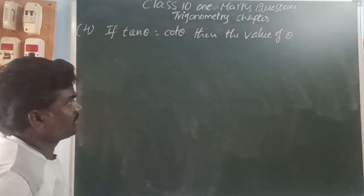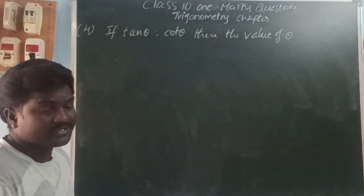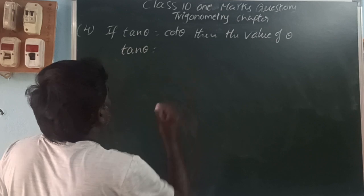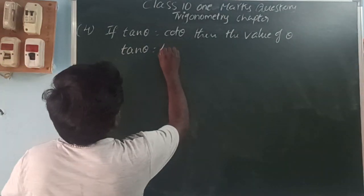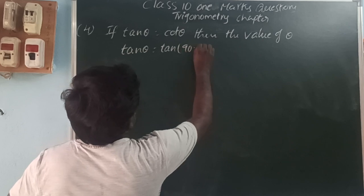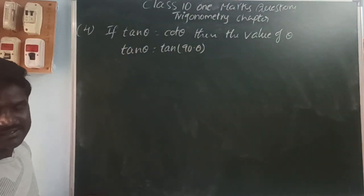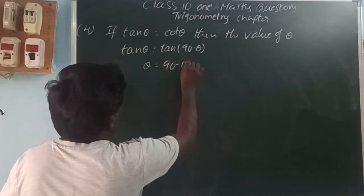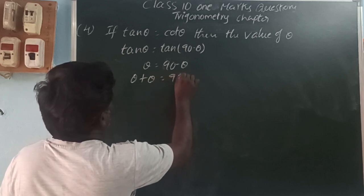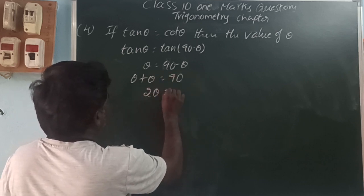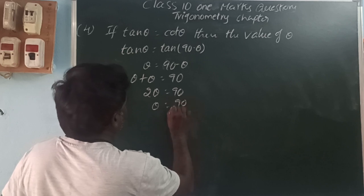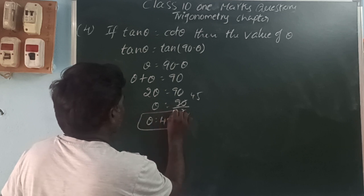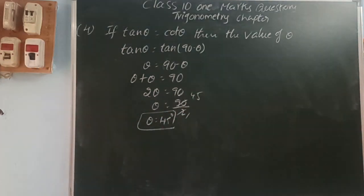Next: if tan θ equals cot θ, then find the value of θ. We can find this by using complementary angles. Tan θ can be changed using complementary angles — tan of 90 minus θ equals cot θ. So both sides being equal means θ equals 90 minus θ. Therefore θ plus θ equals 90, so 2θ equals 90, and θ equals 45 degrees.